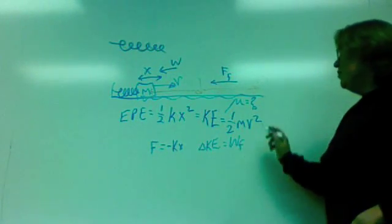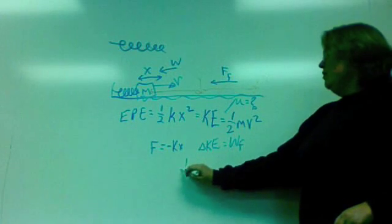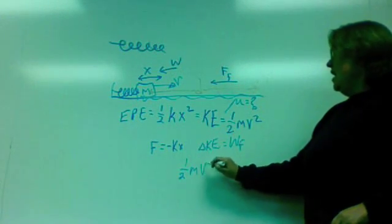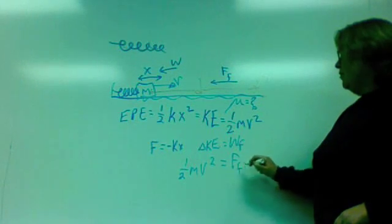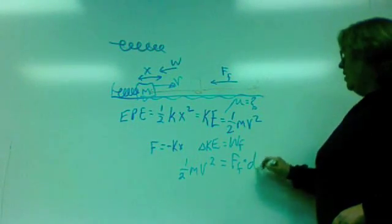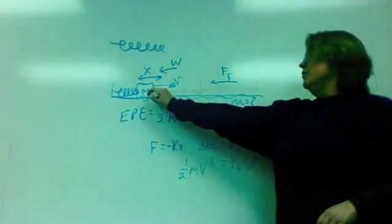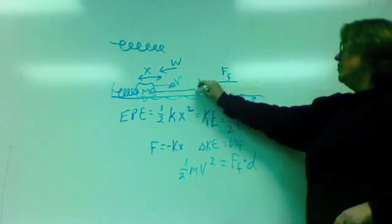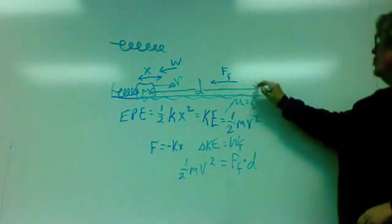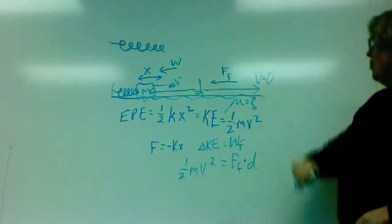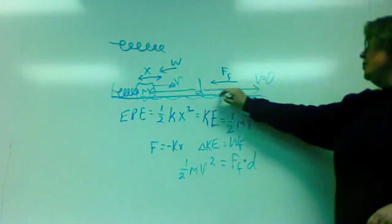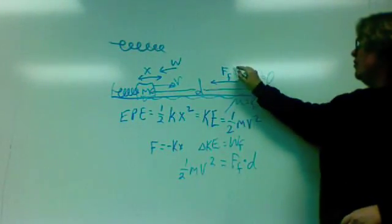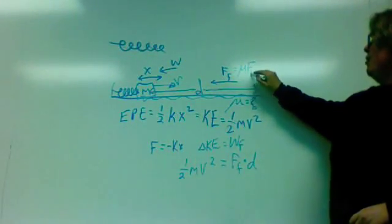The change in kinetic energy, well, this is how much we started with. We end up with nothing. The work done by friction is going to be that frictional force applied for d meters, this distance that the block moved before it finally came to rest. Now, what is the frictional force? It's mu times the normal, of course.